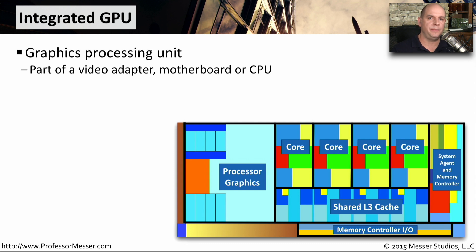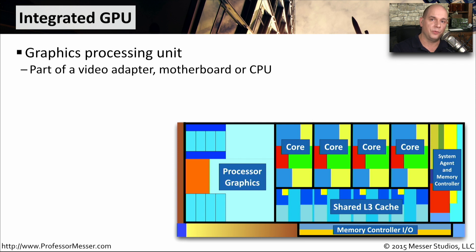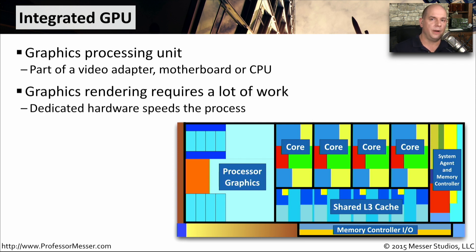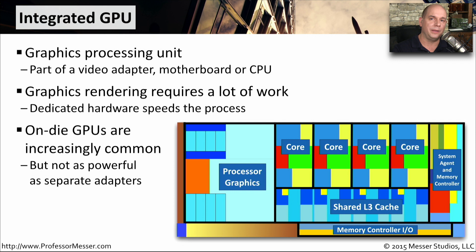One of the more recent innovations in CPU architectures is the ability to embed the graphics hardware directly on the CPU itself. Normally, we would have a separate video adapter or a separate set of chips on the motherboard handling the video. By integrating the graphics processor directly in the CPU, we're able to get rid of those other components and optimize the performance of our graphics subsystem. The graphics subsystem requires quite a bit of work to show high-resolution images for the graphical operating systems we use today. Even so, integrated graphics is still not as powerful as having a separate dedicated adapter providing the graphics function.